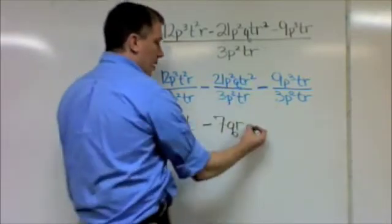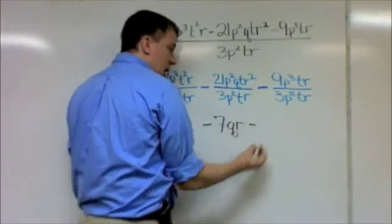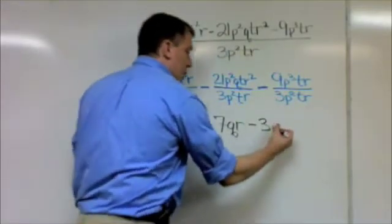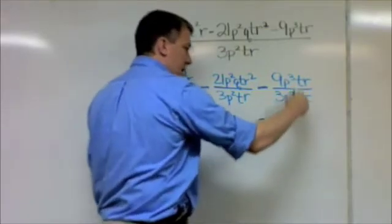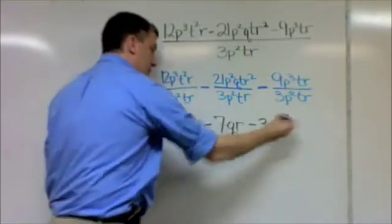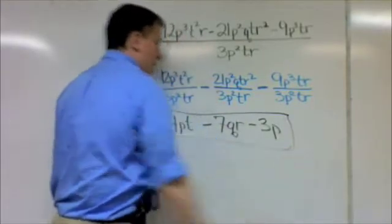Now, last one. Minus. 9 divided by 3 is 3. And p³ divided by p² is just p. t divided by t cancels. r divided by r cancels. And I'm done. So this whole division problem came down to this.